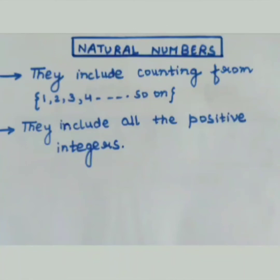Natural numbers also include all the positive integers. Natural numbers are not negative, and whole numbers are also not negative. Whole numbers also do not include any fractional or decimal part.